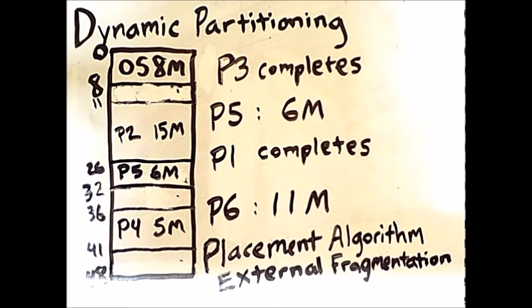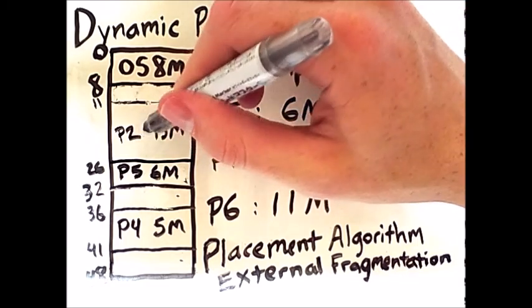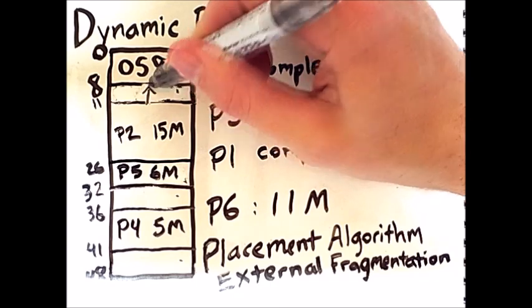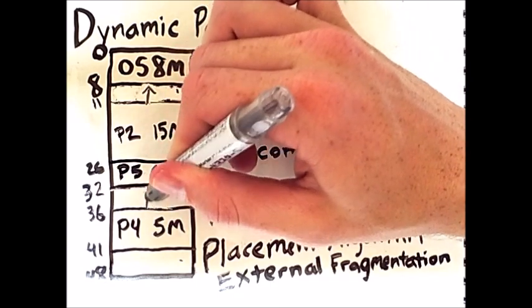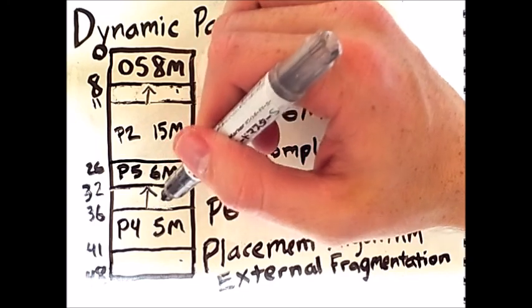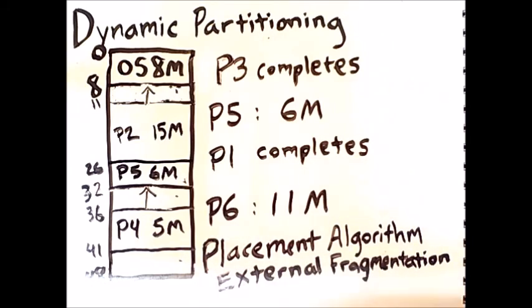External fragmentation can be dealt with via a process called compaction. Compaction involves compacting memory by pushing all occupied regions of memory up into the unoccupied regions of memory until there is only one unoccupied region of memory at the end of memory, like so.